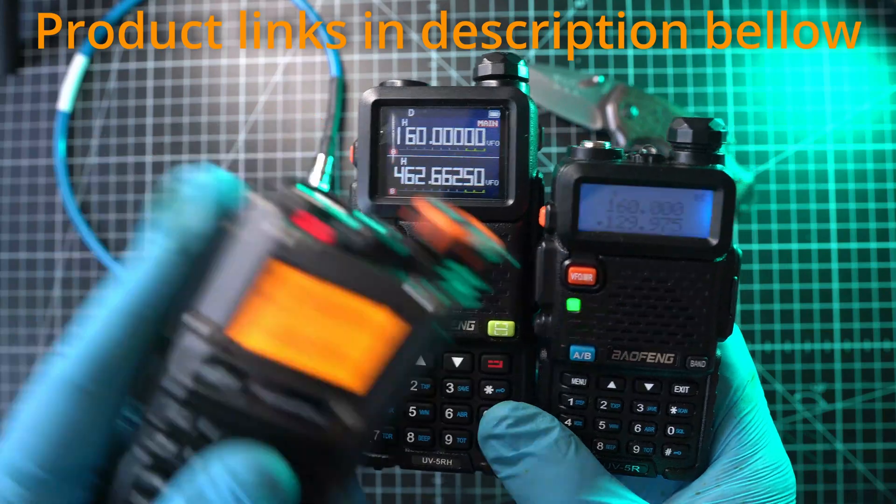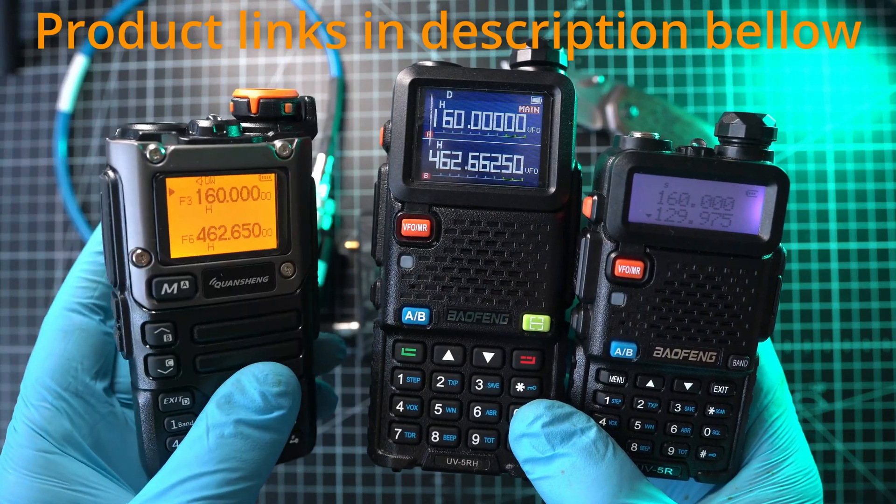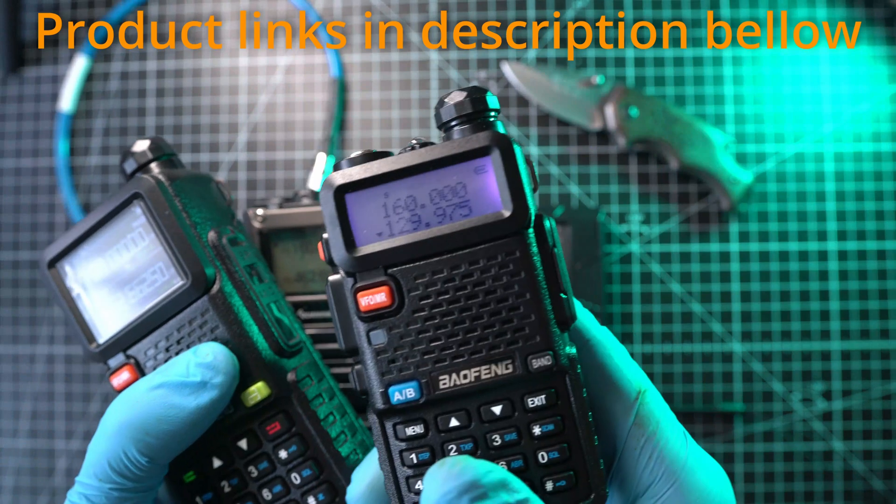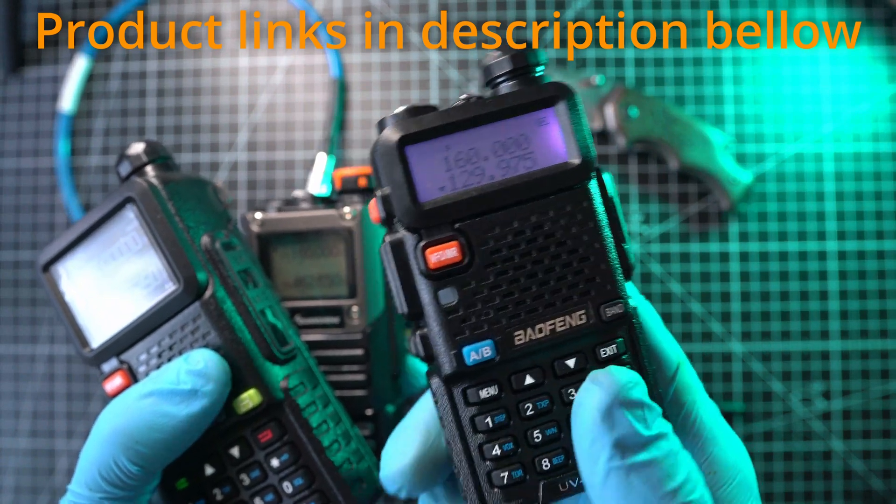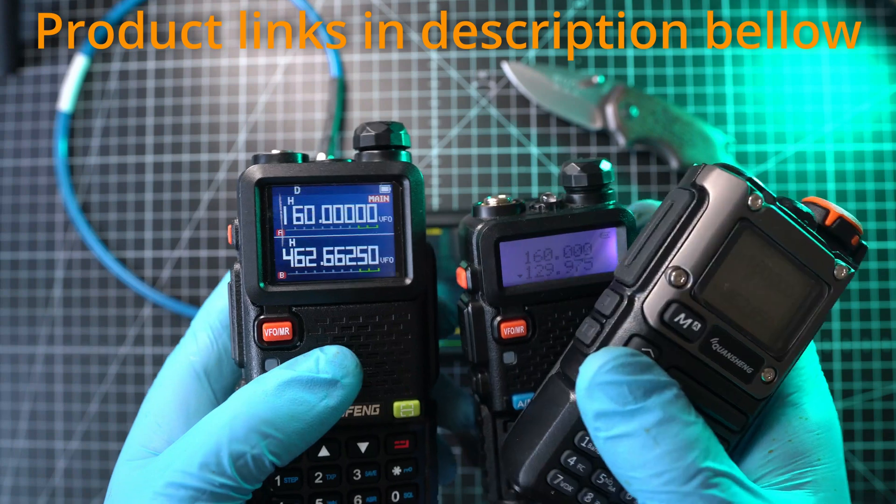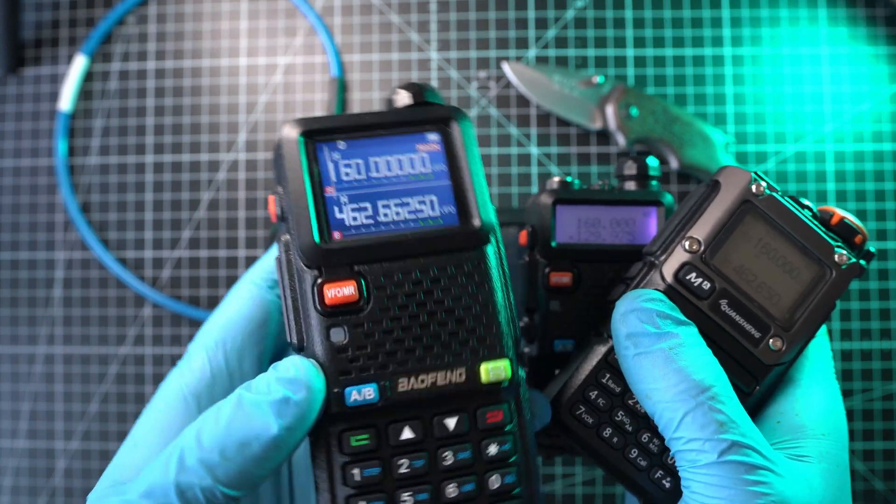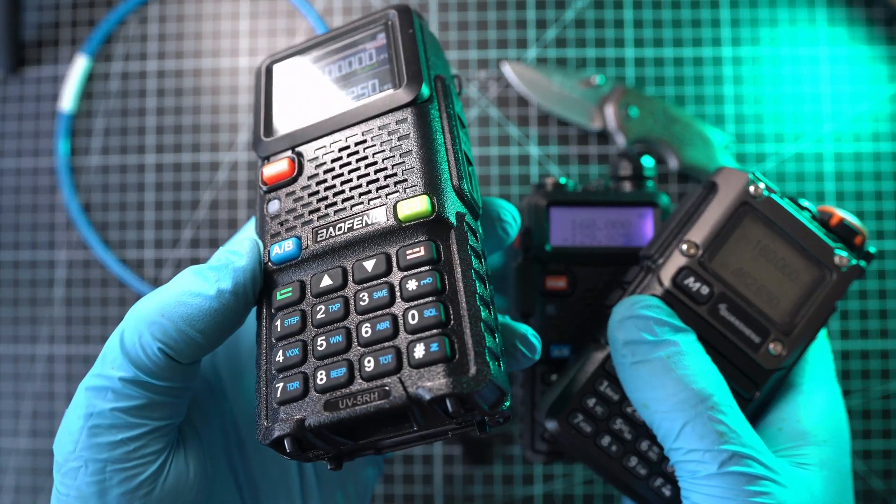Here on left, Quansheng UVK5, probably the most gangster of these. Next, Baofeng UV5R, the 2024 version with airband. And this Baofeng UV5RH.